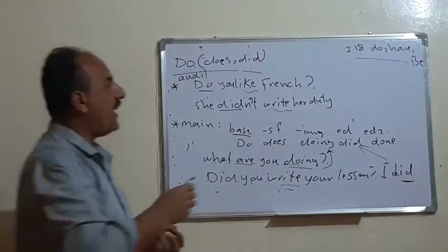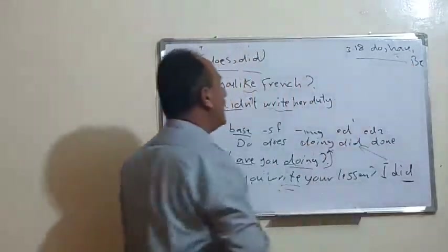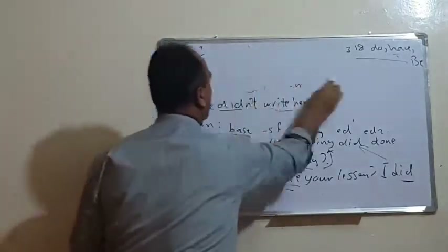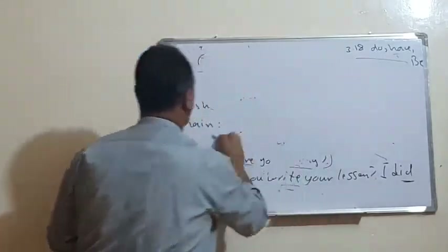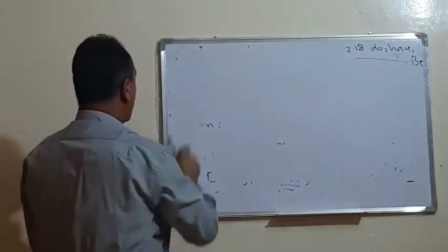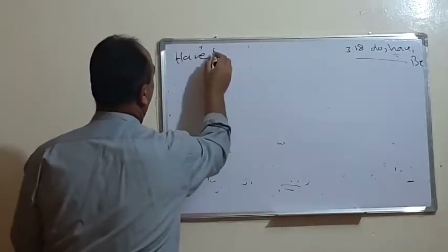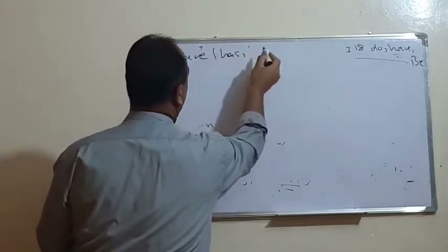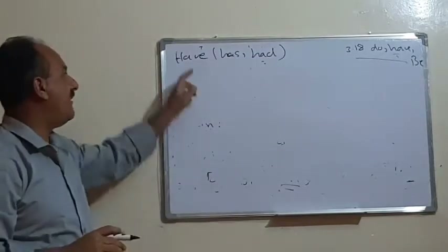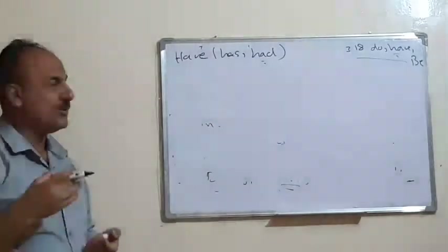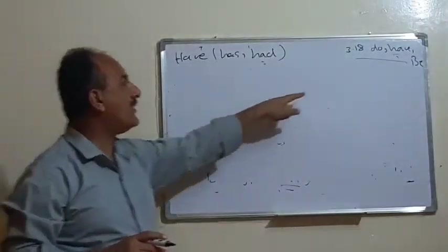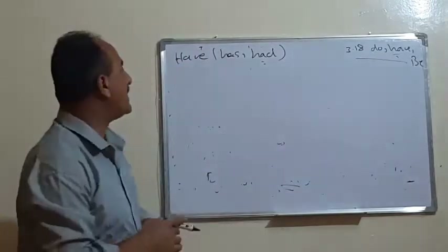The auxiliary verb 'have' has three cases. When we say 'have,' we also have 'has' and 'had' for the past. 'Has' and 'have' are used in the present — 'have' for I, you, we, or plural subjects, and 'has' for the third person singular — the same pattern as with 'do.'